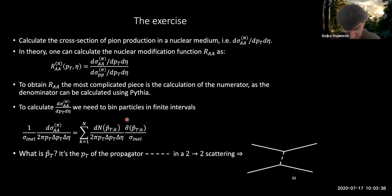The goal of the exercise is to essentially try and calculate RAA. Really, we're going to try and calculate the numerator in RAA, which is the cross-section of producing pions as a function of Pt and as a function of rapidity.